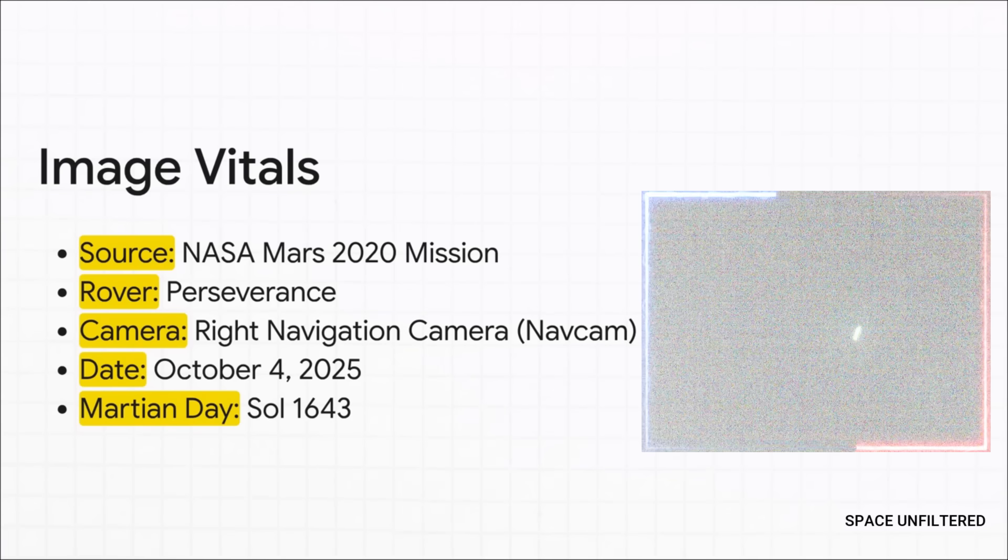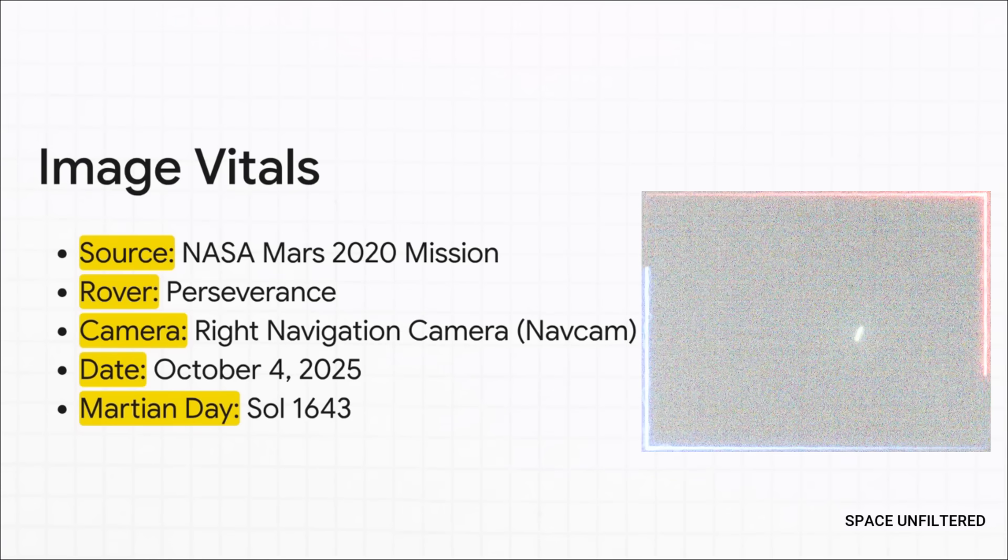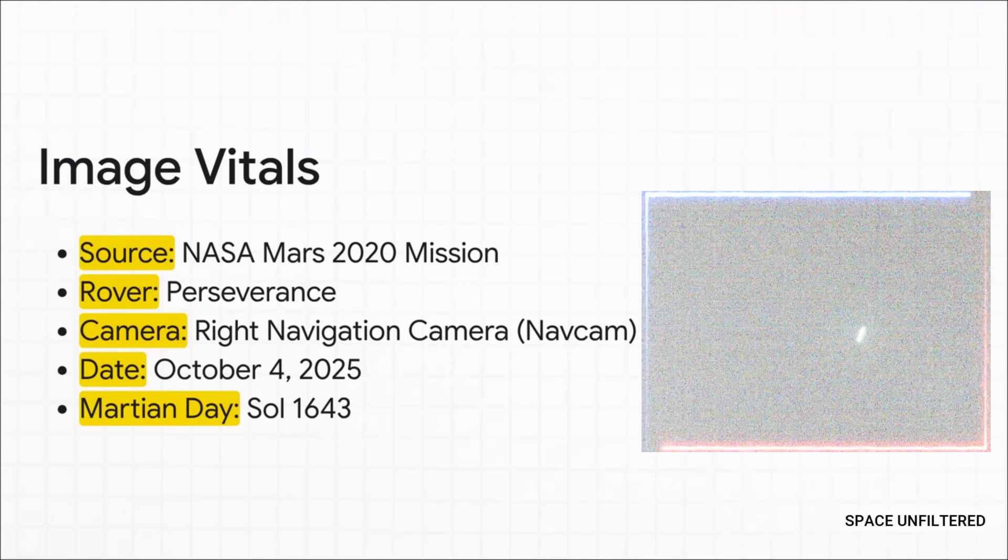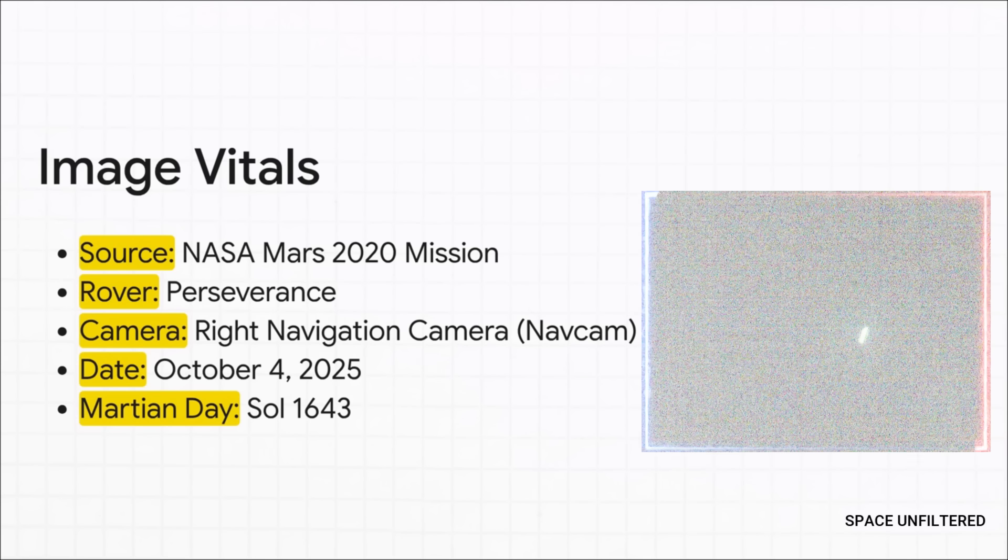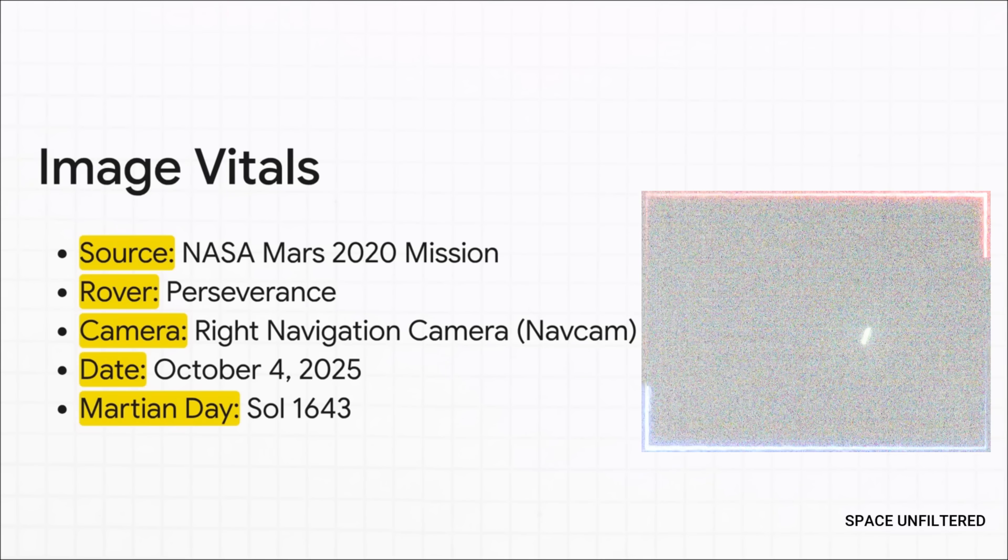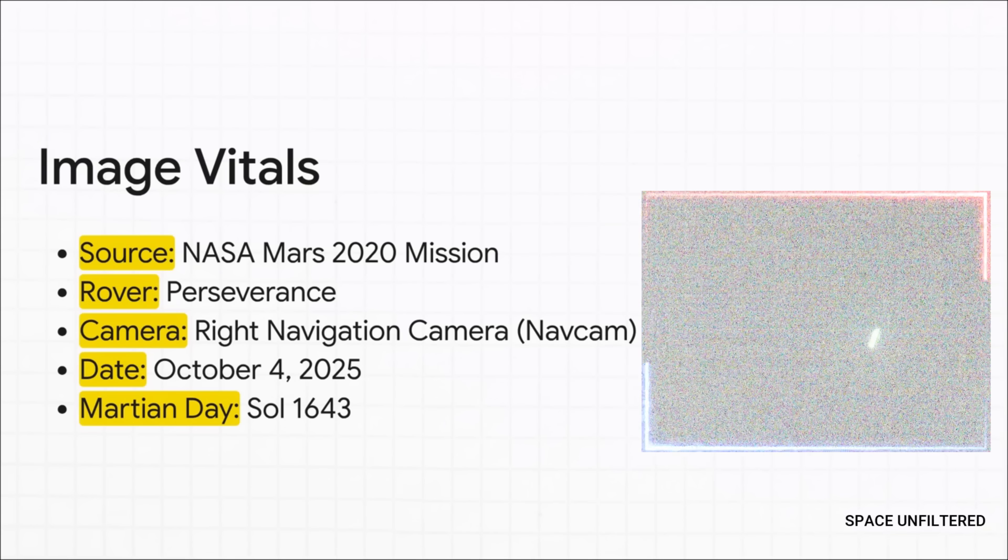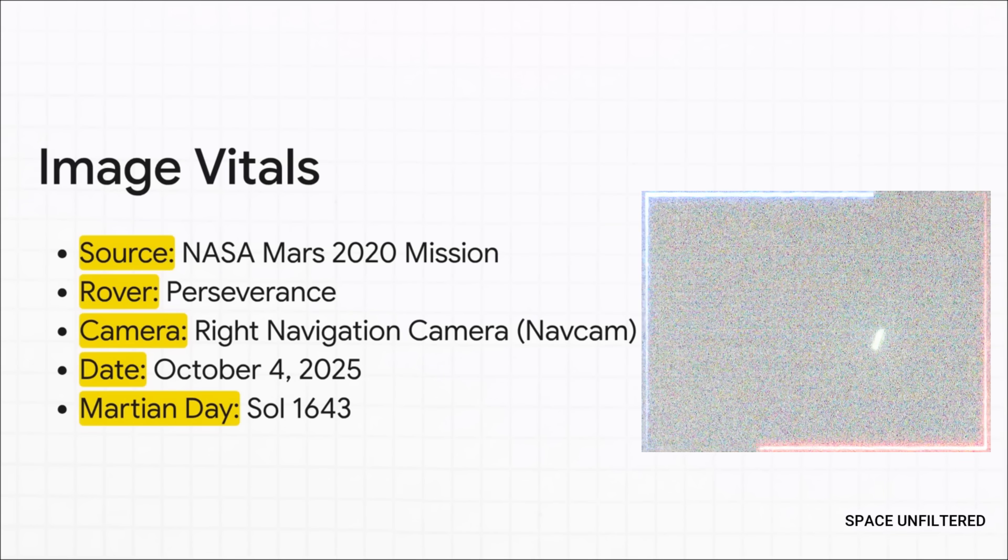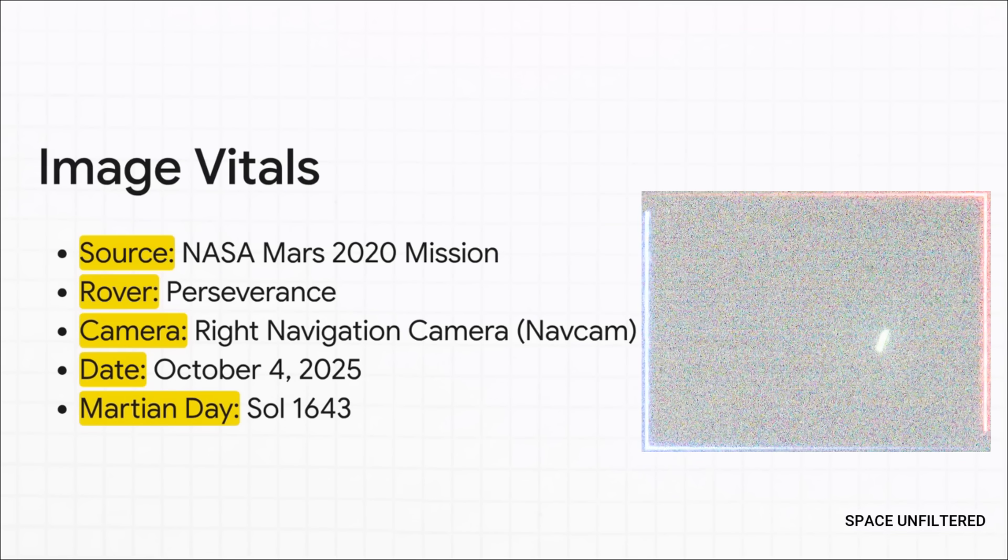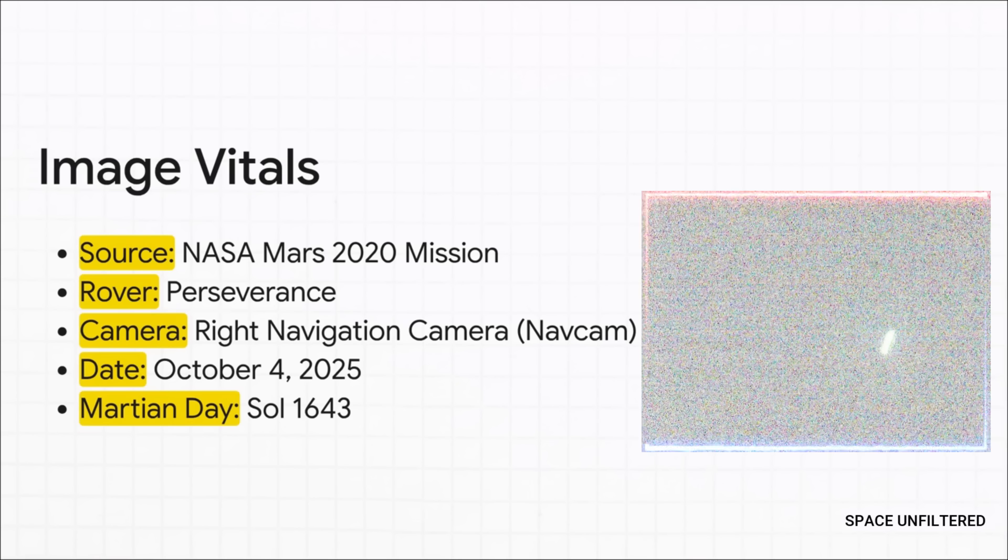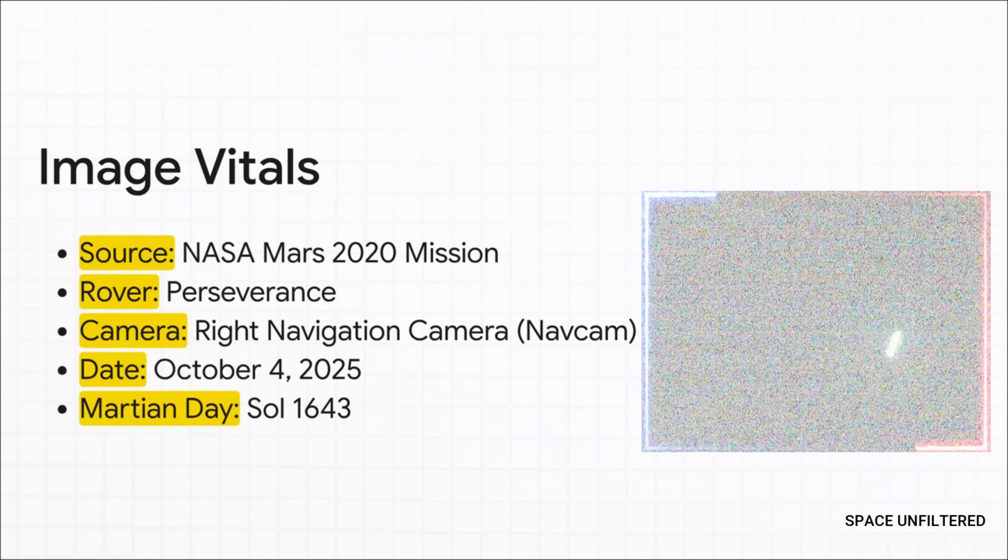Now, this isn't some blurry photo from the internet. It's the real deal, official data from NASA. That long string of letters and numbers is basically its serial number. We know it came from the rover's right navigation camera, or nav cam. We know the Martian day called a Sol, and we even know the exact time it was taken. All of this proves the image is legit, and gives us the solid facts we need to start.